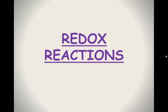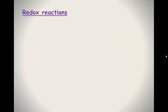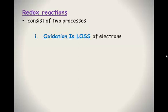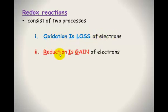Redox reactions consist of two different processes: an oxidation process, which is a loss of electrons, and also reduction, which is a gain of electrons. So basically, redox reactions are the transfer of electrons.